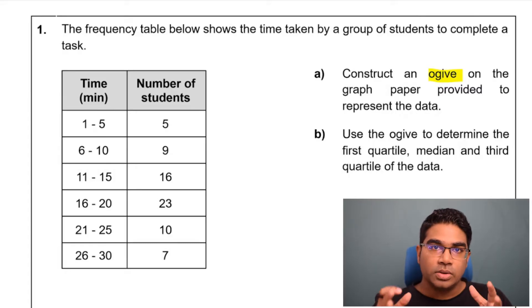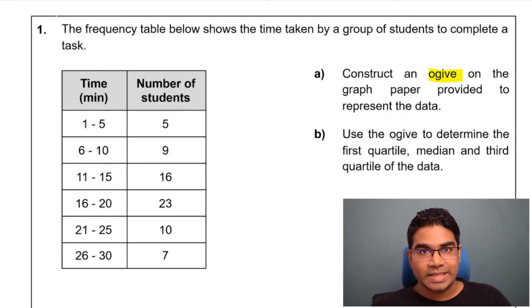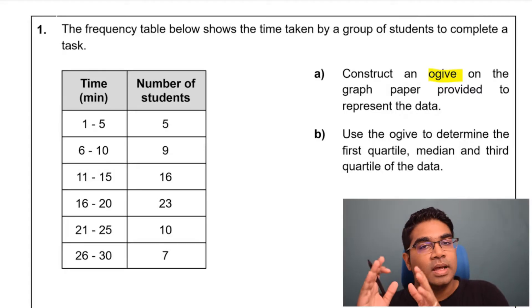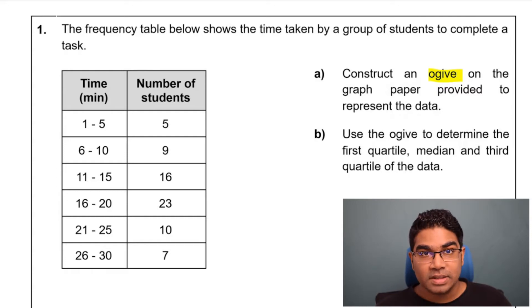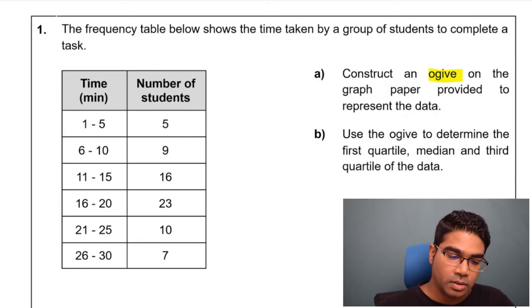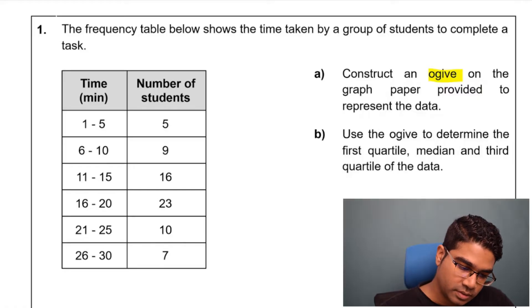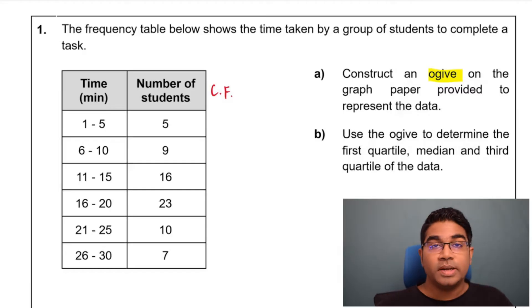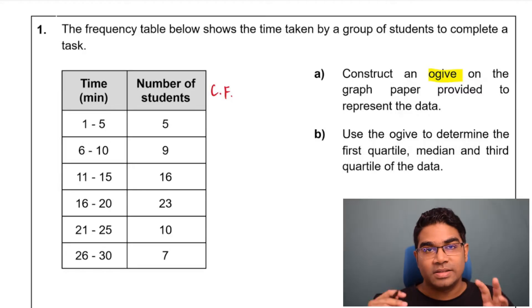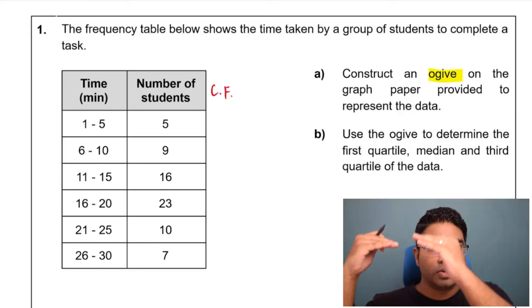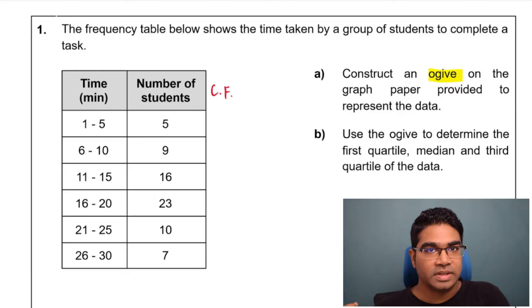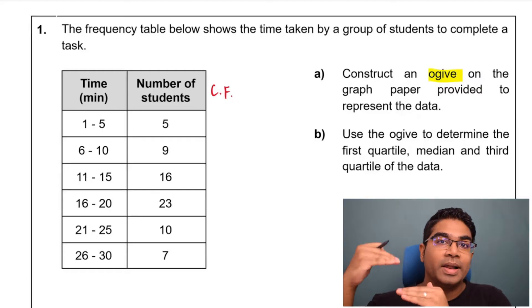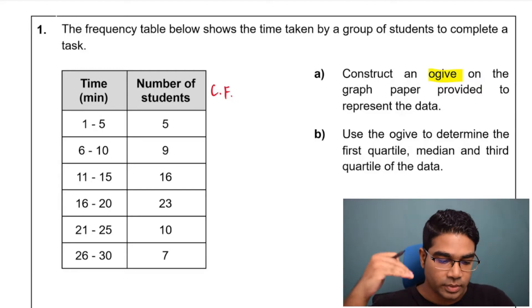Once again, an ogive is a graph of cumulative frequency against the upper boundary. The first thing to do is to create our columns for our points. First, we do cumulative frequency, which I will label as CF. Cumulative frequency is just the collective frequency — as you go, you keep adding on the frequencies.